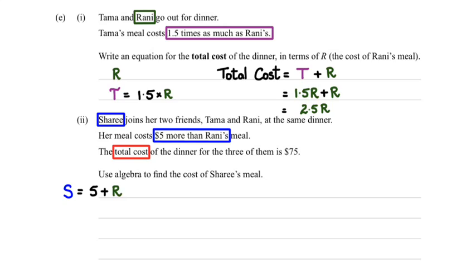Okay, now we've got the total cost of the dinner, which is $75. So we can say that $75 equals the amount Rani spent, plus the amount Tama spent, plus the amount Shari spent. And what we can do is we can write all of these in terms of R. Because Rani's amount, well, that's just R. Tama's was 1.5R. And Shari's was 5 plus Rani's, which is 5 plus R.